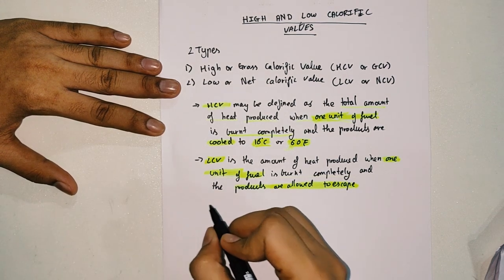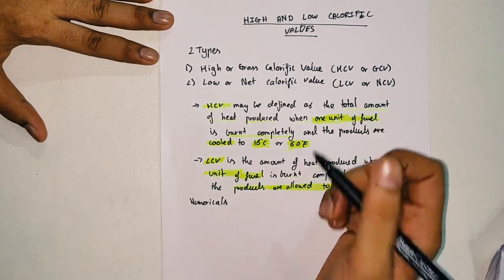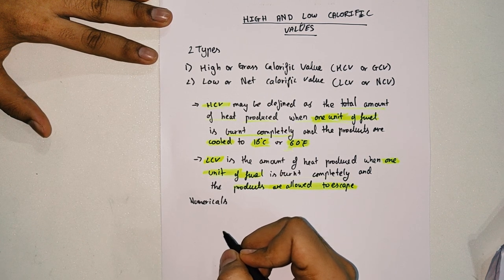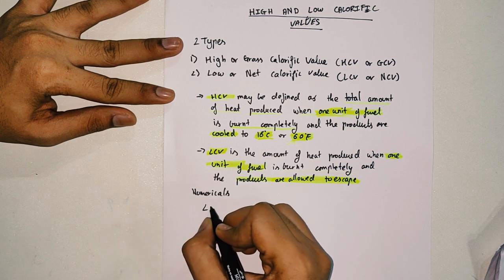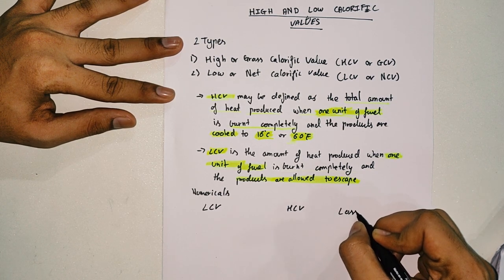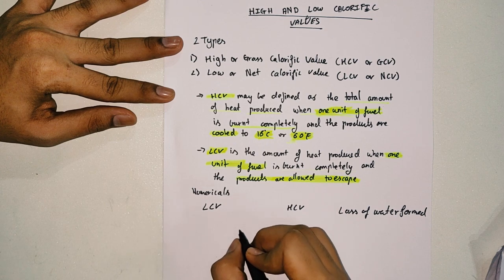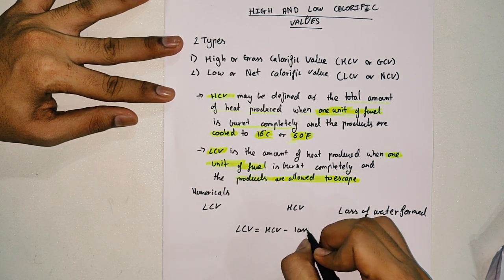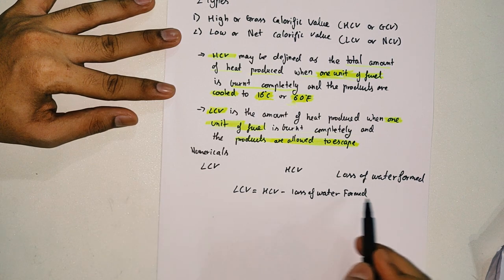To solve numericals of HCV and LCV, we need three basic things: the formula for LCV, the formula for HCV, and the formula for loss of water formed. We can combine all three into one formula: LCV equals HCV minus loss of water formed.